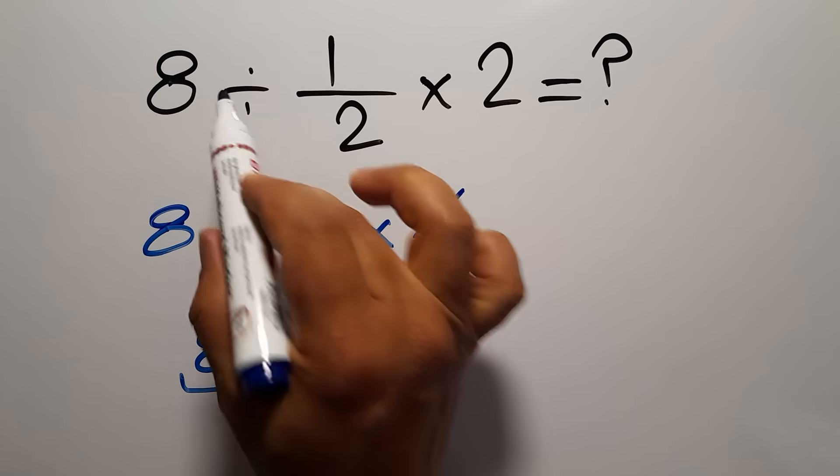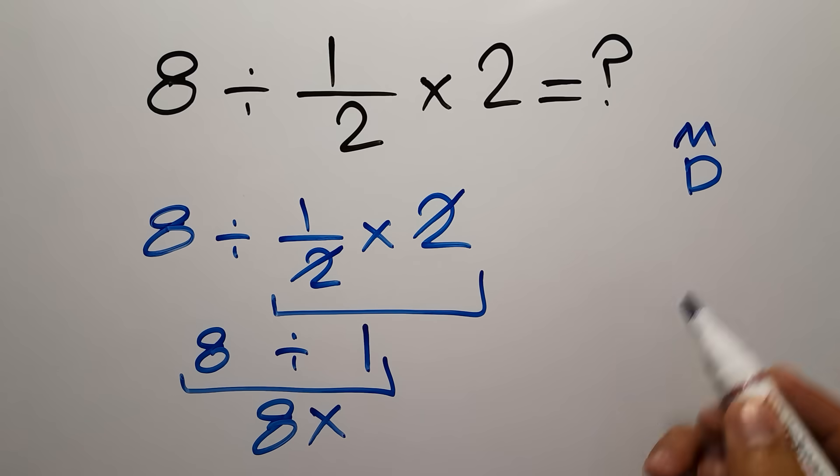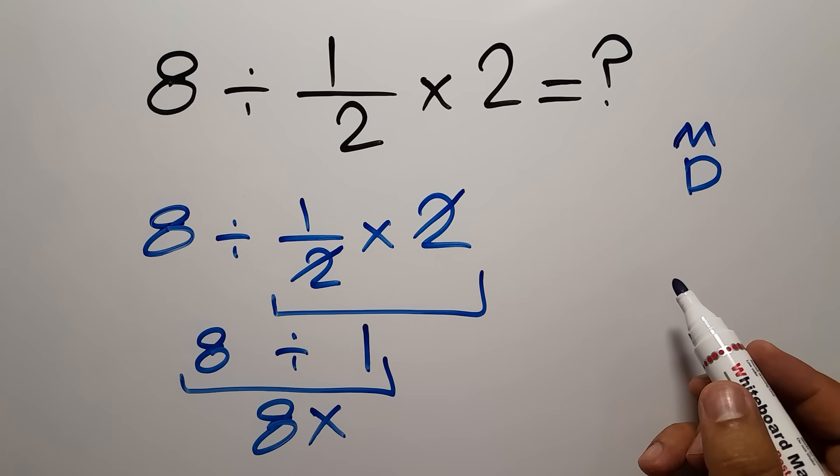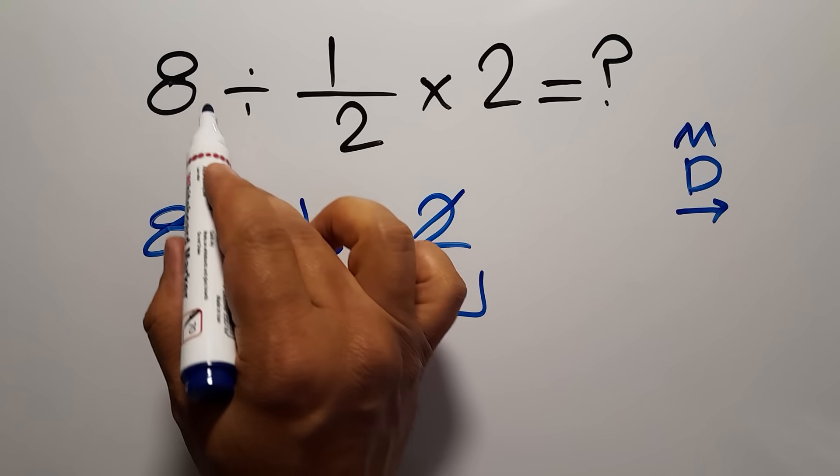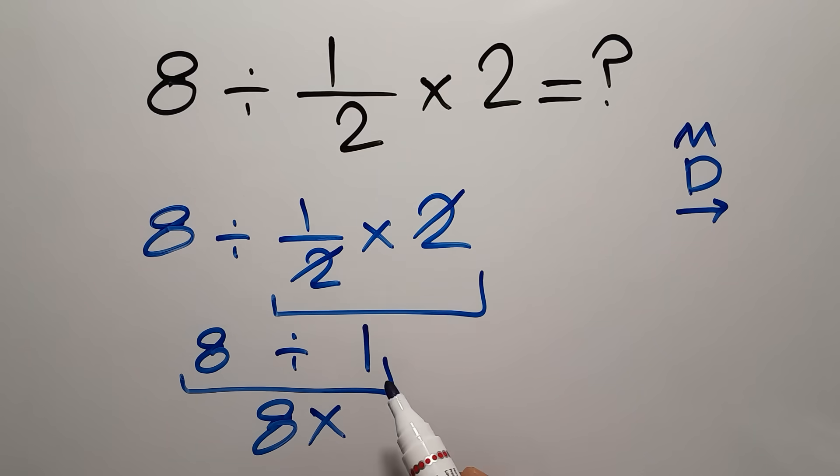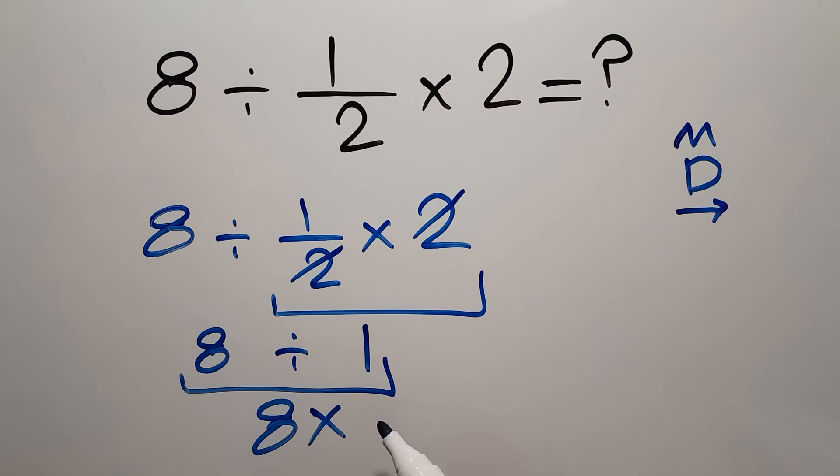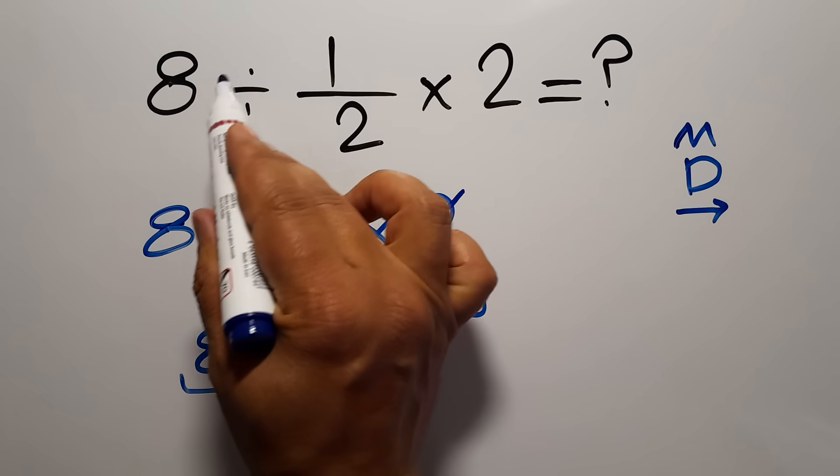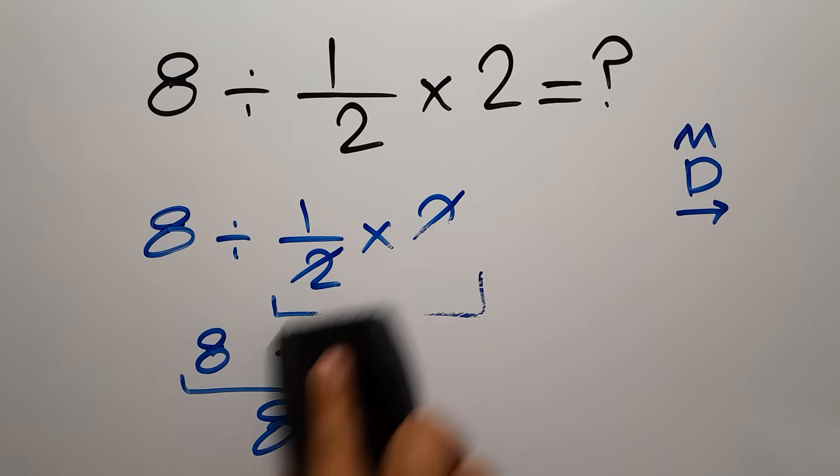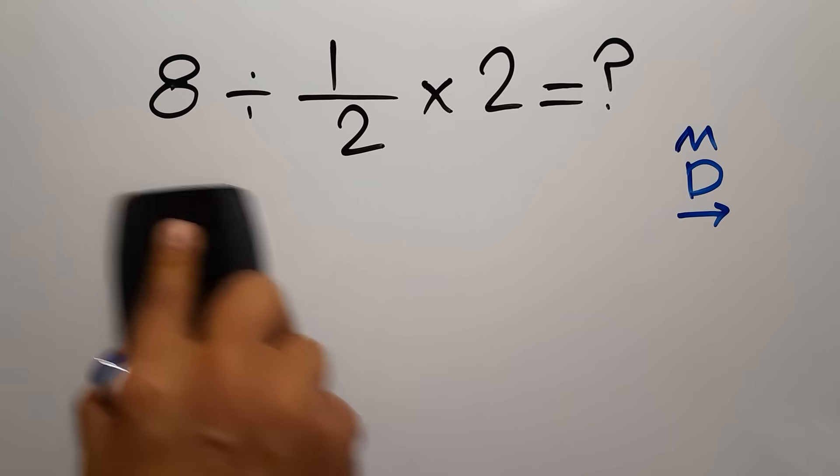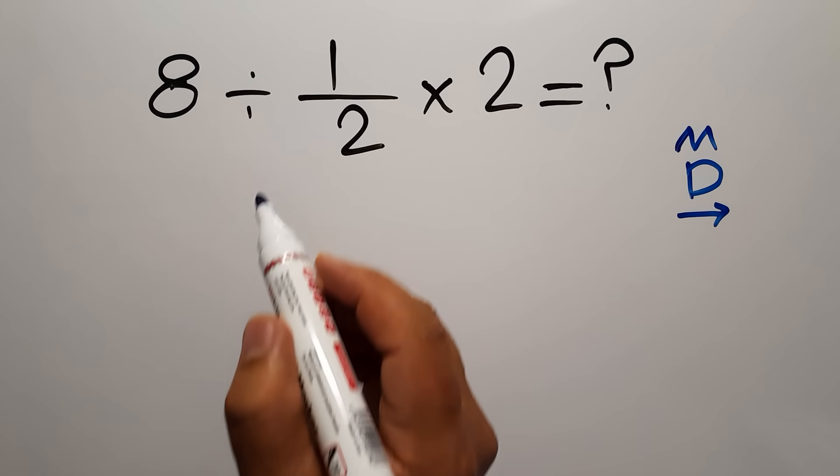In this expression we have one division and one multiplication. As we know, multiplication and division have equal priority and we have to work from left to right. So first we have to do this division, not this multiplication.